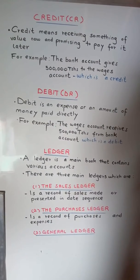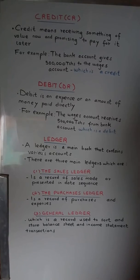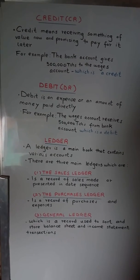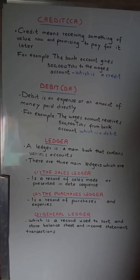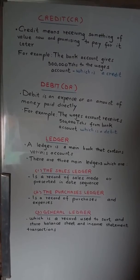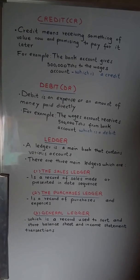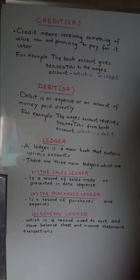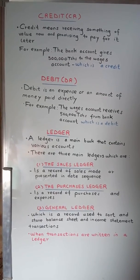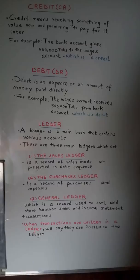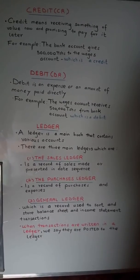The general ledger is a record used to store balance sheets and income statement transactions. When transactions are written in a ledger, we say they are posted to the ledger.